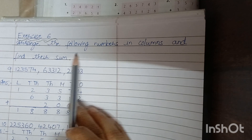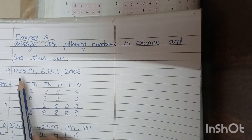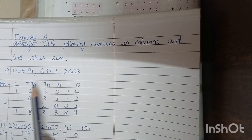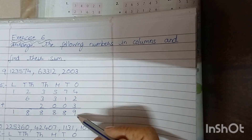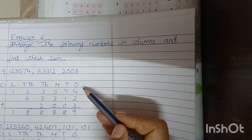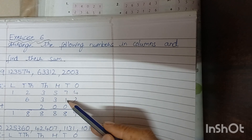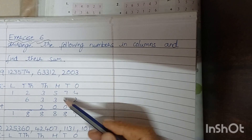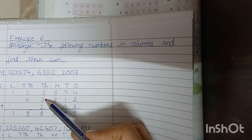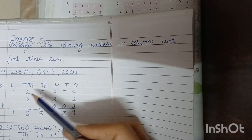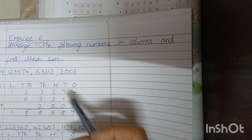Arrange the following numbers in columns and find their sum. Arrange these numbers in the place value chart, then add column wise starting from the ones place. 4 plus 2 plus 3 is 9, 7 plus 1 plus 0 is 8, 5 plus 3 plus 0 is 8, 3 plus 3 plus 2 is 8, 2 plus 6 is 8, and 1 comes down as 5.